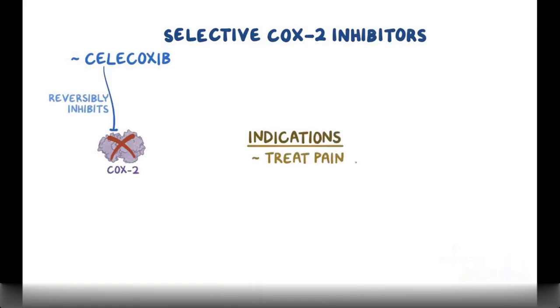Moving on to selective COX-2 inhibitors. The main medication in this group is celecoxib. Celecoxib reversibly inhibits COX-2, so it can treat pain and inflammation like the other NSAIDs.